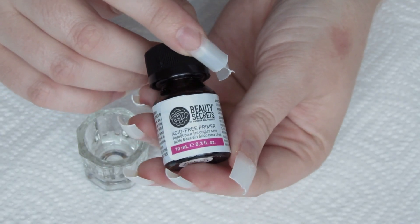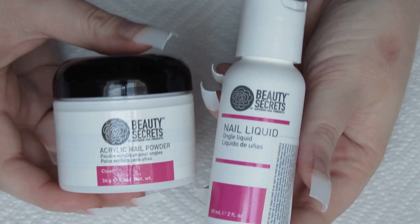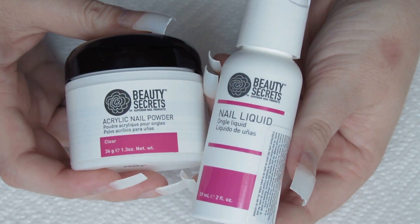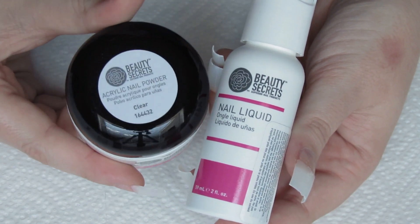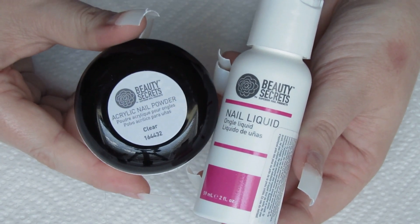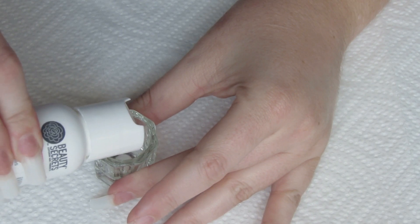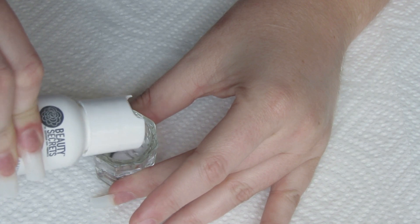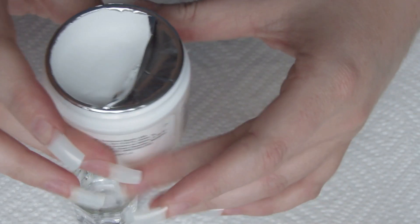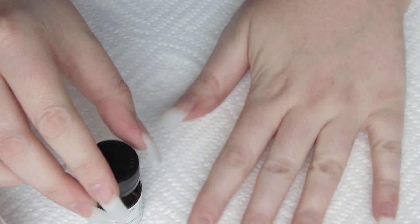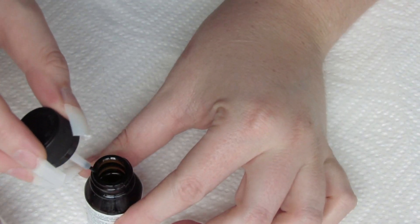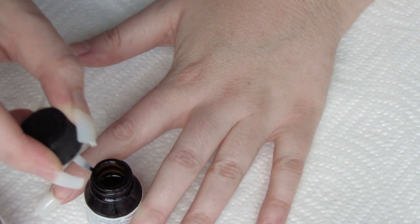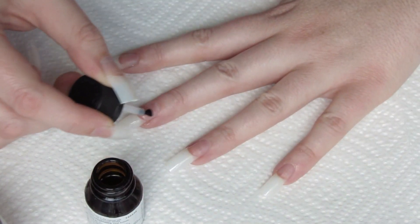I'm using this Beauty Secrets Primer that I got from Sally Beauty Supply and also the Beauty Secrets Acrylic Nail Powder in Clear and the Beauty Secrets Nail Liquid. This is my first time using this acrylic powder, and it's so much better than what I was using before from the Kiss Acrylic Kit. Putting a small amount of the liquid into my little dappen dish, which I also got from Sally Beauty Supply, and just situating everything so it's ready to go. Then I'm putting on a tiny, tiny amount of primer on each of my nails. Only use a tiny bit.